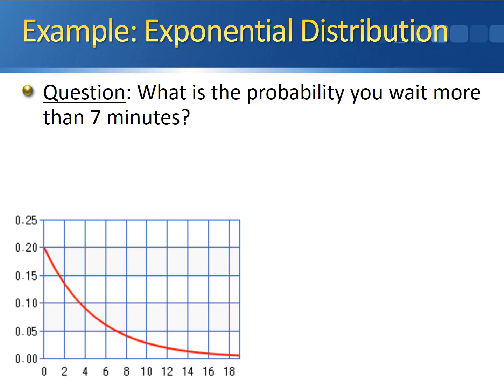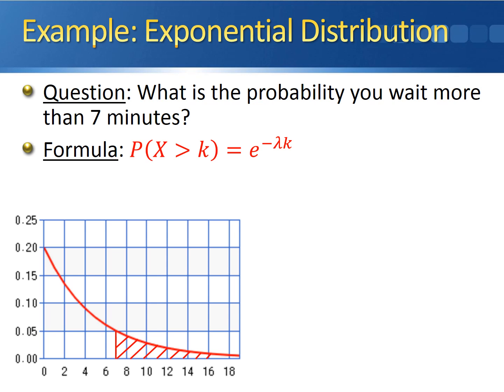For the probability of waiting more than seven minutes, draw the distribution, mark seven, and shade from seven to positive infinity. The equation to use is e to the negative lambda times k. So the probability is e to the negative 0.2 times 7, which equals e to the negative 1.4, giving a probability of 0.246.